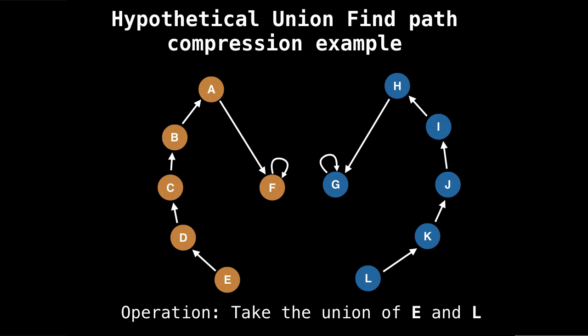So now suppose we want to unify nodes E and L, or just unify groups orange and blue, but we have access to E and L, and that's what we're calling the unify operation on.